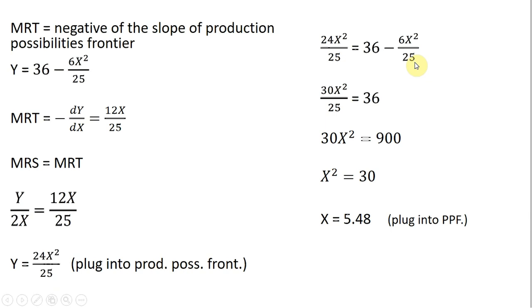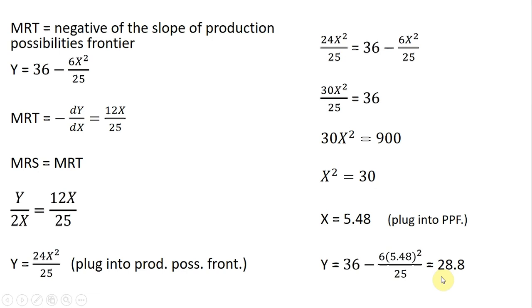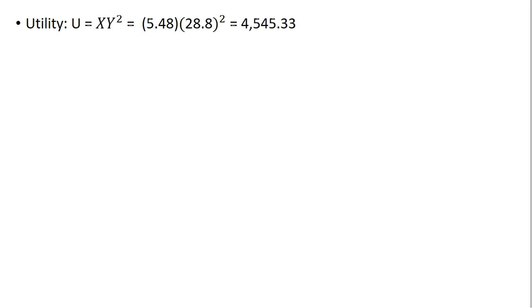Solving for x squared, we add 6x squared divided by 25 to both sides, giving 30x squared on the right. Since 25 times 36 is 900, and 900 divided by 30 is 30, taking the square root of 30 tells us Robinson will produce 5.48 units of good x. Plugging 5.48 back into the production possibilities frontier, Robinson will produce 28.8 units of good y. His utility-maximizing bundle is therefore 5.48 units of x and 28.8 units of y, yielding a utility of just over 4,500.